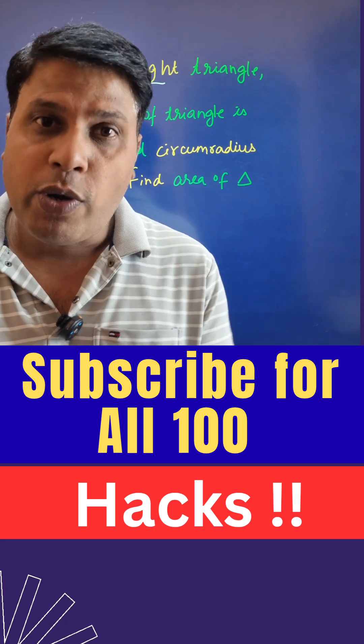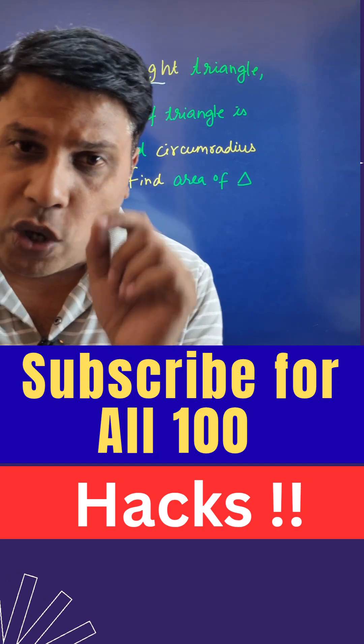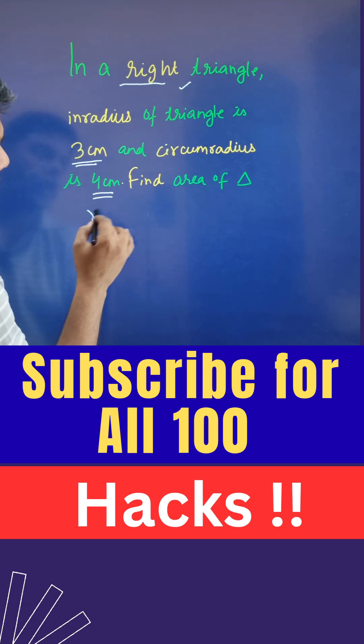You should pause the video and try to solve it. I'll tell you one of the shortest ways to solve this question. So whenever for a right triangle, a small r is given to us (here it is 3) and capital R is given (here it is 4)...